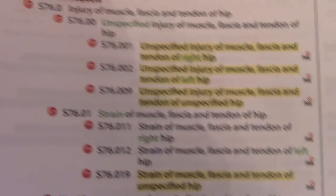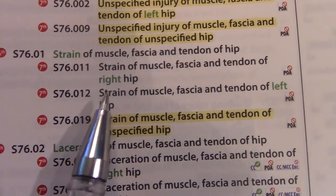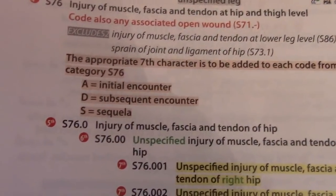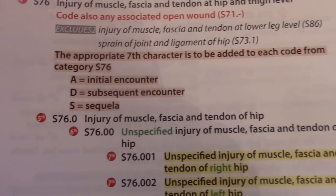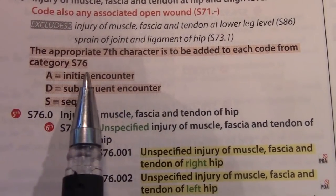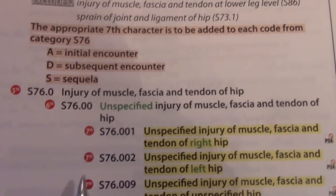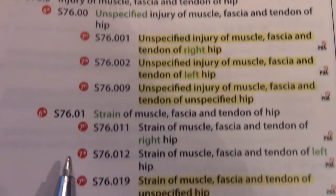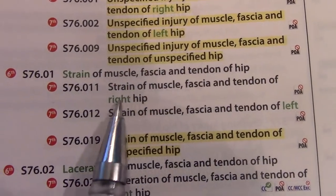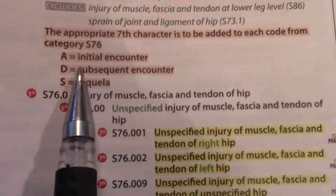Let's quickly turn back here to S7601. Remember we're trying to identify whether it's right or left — right hip, left hip. But that tells me to check the seventh digit, which is right above it in the pink. The appropriate seventh character to be assigned to each code from category S76 — whether it's the initial visit, the subsequent visit, or a sequela. So if we're saying it's of the right hip at S7601, and I say it's initial visit, I'd add an A.